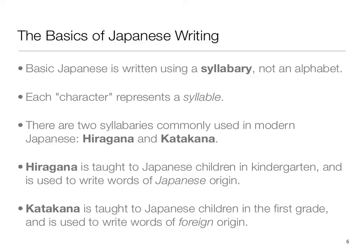There are two syllabaries commonly used in modern Japanese. The first is hiragana — that's hi-ra-ga-na. And the second is katakana — that's ka-ta-ka-na. Hiragana is taught to Japanese children in kindergarten and is used to write words of Japanese origin — native Japanese words. These are the first characters that Japanese children learn when they start writing, and this is what we're looking at in today's presentation.